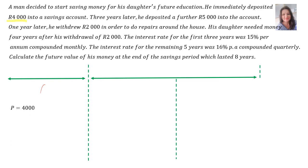P is 4000. Three years later — therefore three years — he deposited a further 5000 rand into the account. One year later, he withdrew 2000 rand, therefore minus 2000 rand. And you can see the deposits and the withdrawals written on the dotted lines.